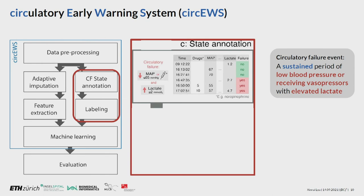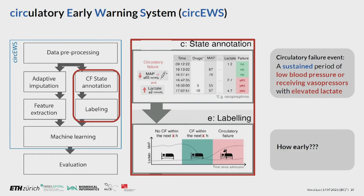After pre-processing, we can extract features and labels from the data. Since we are interested in predicting circulatory failure, we need to know what counts as circulatory failure. Based on medical knowledge from the clinicians in the project, they provided us with a definition of a circulatory failure event, and with that we annotate each time point of the patient as to whether the patient is experiencing circulatory failure or not. We don't want to predict what's happening now — we want to predict circulatory failure in advance, so the final label we use is whether the patient will have circulatory failure in the next X hours.